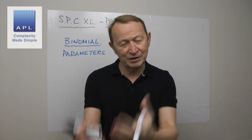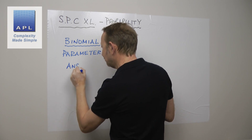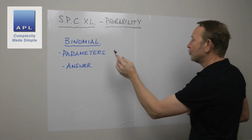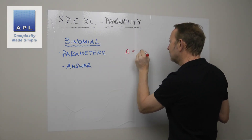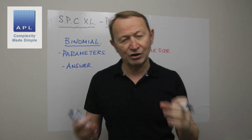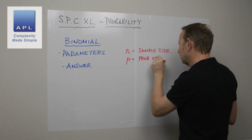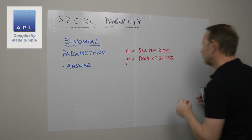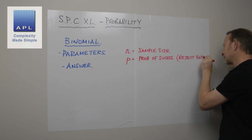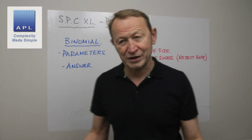You need pieces of information that tell you the basics of what's going on, and you need a question to answer. In the binomial there are two parameters: n, which is your sample size — how many results are you actually looking at — and p, the probability of success, which for us is probably your reject rate. You're asking: what's the probability that I'm actually going to find a defect if a defect is really present?